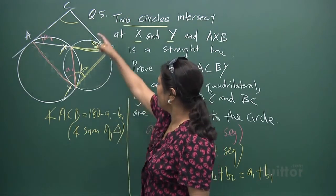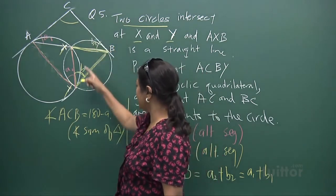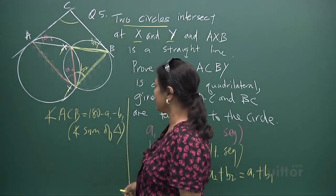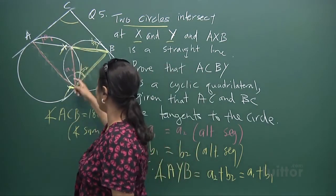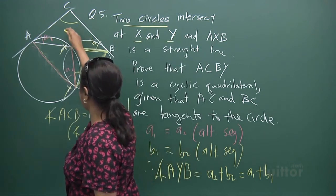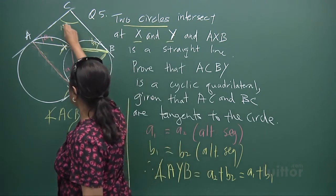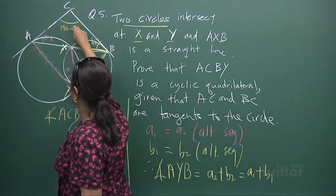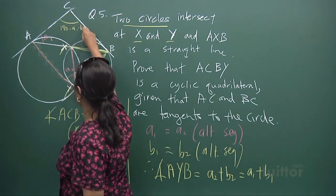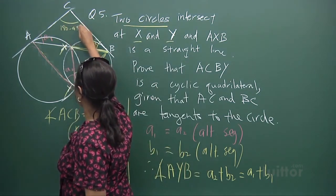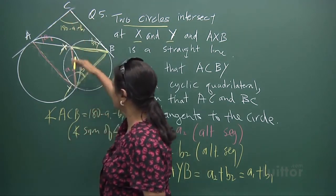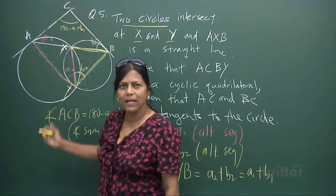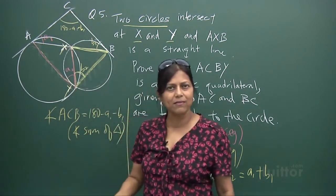Now, don't these two angles add up? If this is 180 minus A1 minus B1, don't these two add up to 180 degrees?